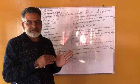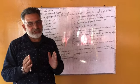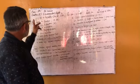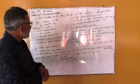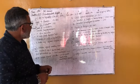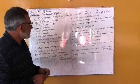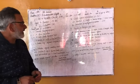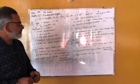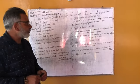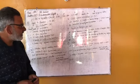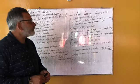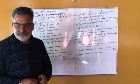Yesterday we went through the fundamental right to equality, which is under Article 14 to 18, which includes equality before law, prohibition of discrimination, equality of opportunities and employment, abolition of untouchability, and abolition of the system of titles.